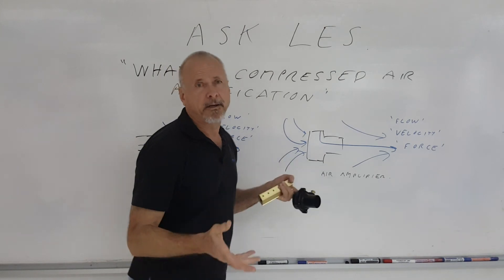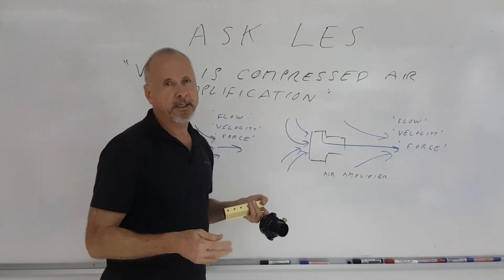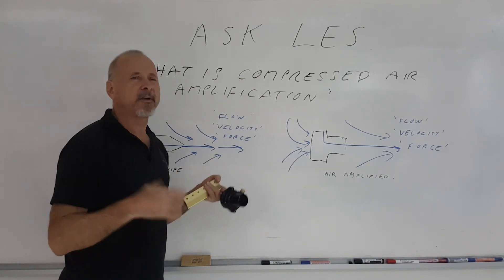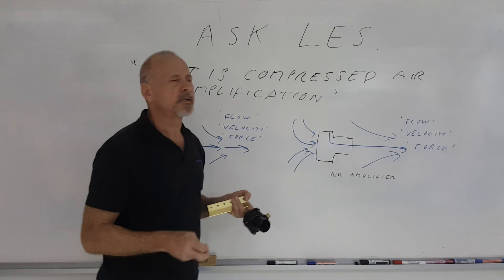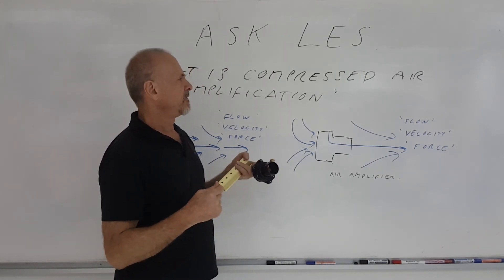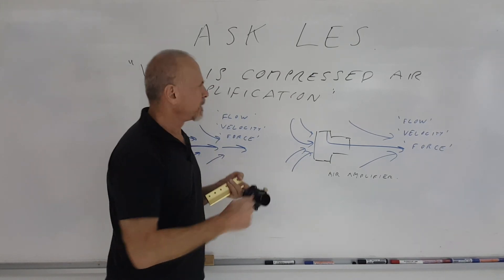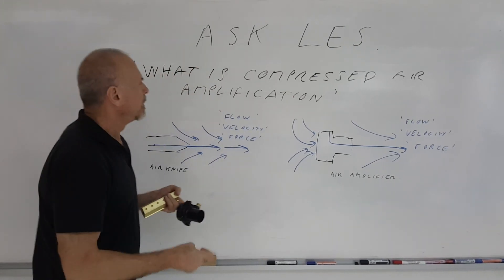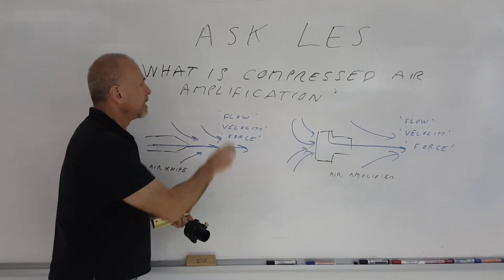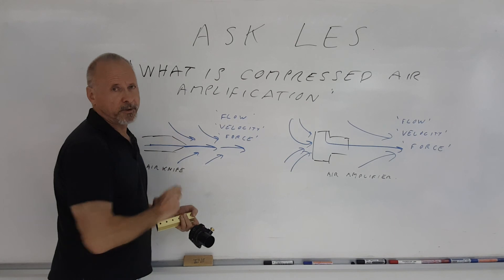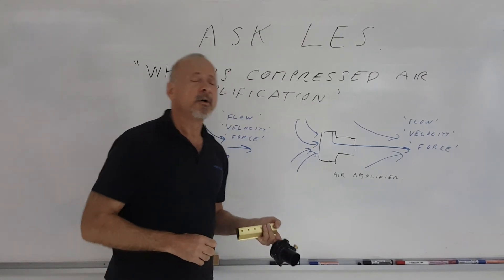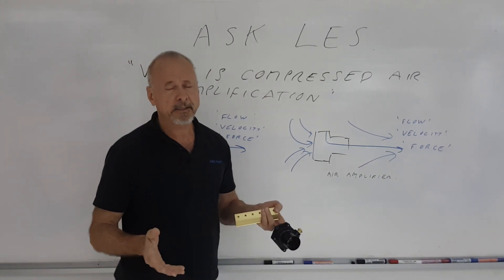But again, even that 45 is an approximation. It's going to depend on the temperature of the air, the density of the air, and even the pressure going into it. So again, when you hear a particular figure for air amplification, take it with a grain of salt. It's an approximation to give you sort of an indication of how much airflow is created, but it doesn't really tell you what you need to know. What you need to know normally is really the flow produced, the air consumption, the velocity, and the force produced. If you have any other questions concerning the use of compressed air for blow-off, cooling, moving, or drying, ask Les.